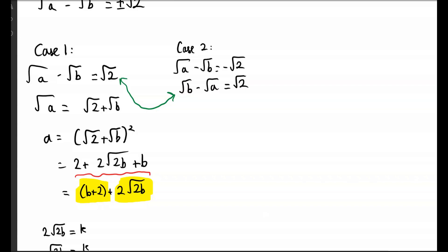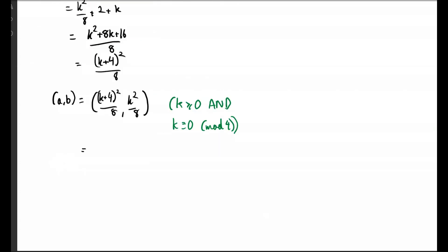So our answer in this case is just going to be the same ordered pair, but with a and b swapped. We get the other solution: (a,b) = (k²/8, (k+4)²/8).